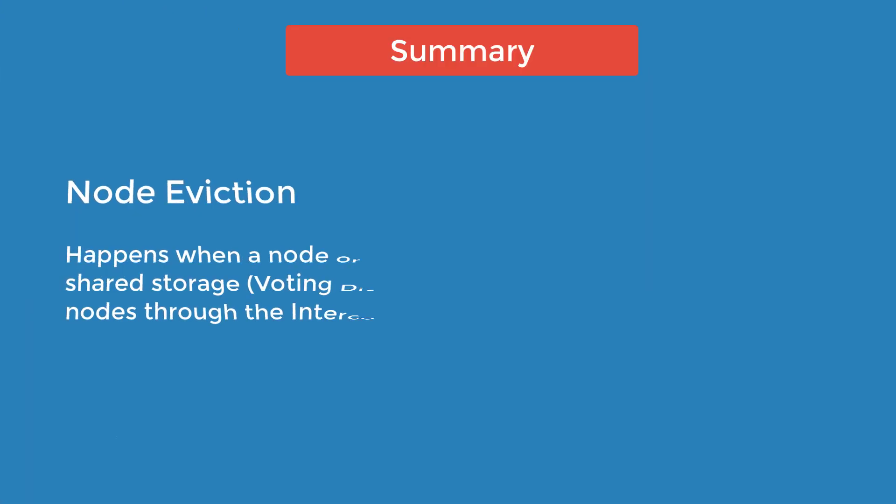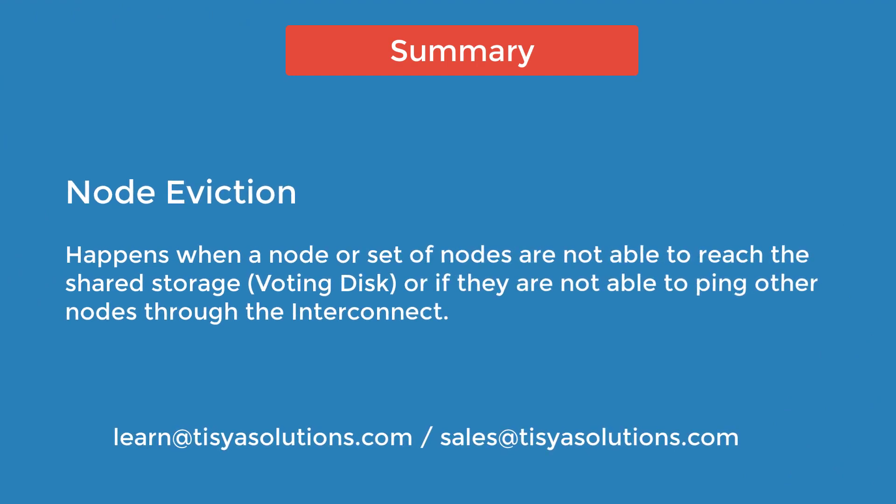To summarize: voting is done on the voting disk, and pinging is done on the interconnect. Nodes must be able to communicate with each other via both mechanisms to remain part of the cluster. Whenever they are not able to communicate, the nodes that cannot talk are evicted. The system tries to restart the clusterware or reboot the node to bring them back, but if it still cannot recover, manual intervention is required to fix the issue. That is how node evictions work and how Oracle clusterware handles them.